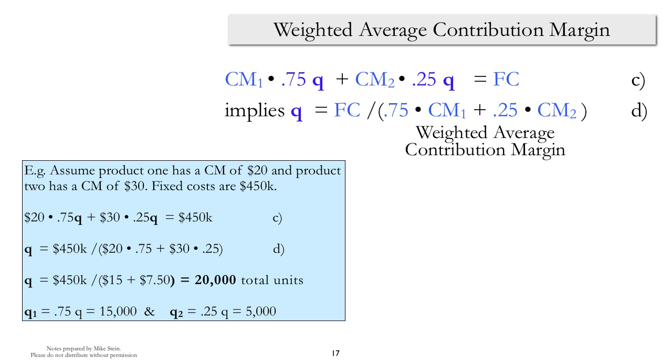We will start once again with equations C and D, but substituting the values that we know from the problem. That is, fixed cost of $450,000, and contribution margin for product 1 of $20, and contribution margin for product 2 of $30. And when we look at equation D, this looks promising because there are no unknown variables. So it looks like we can solve this.